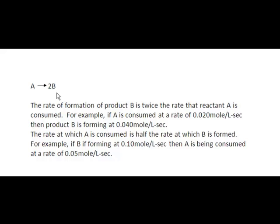For example, if A is consumed at a rate of 0.02 moles per liter per second, that means B is forming at twice that rate because of that 2 in front of the B. On the other hand, the rate at which A is consumed is half the rate at which B is formed. So if B is forming at a rate of 0.1 moles per liter per second, then A is being consumed at half that rate.